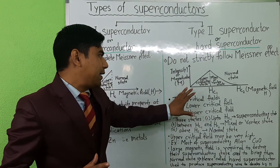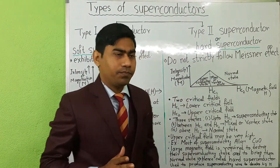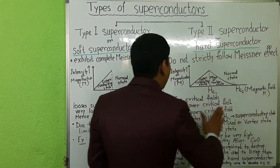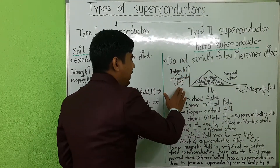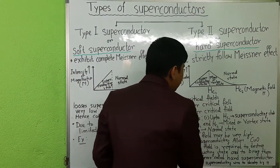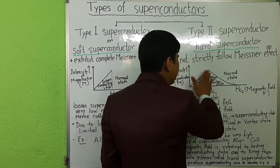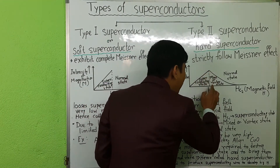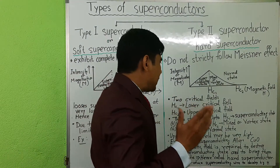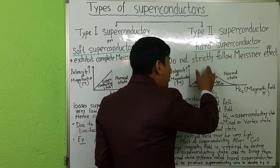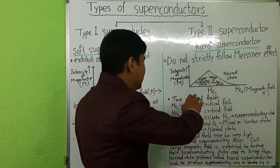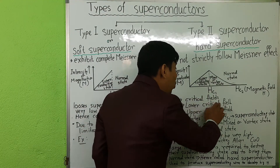To explain type 2 superconductors, we draw the magnetization graph. Here also, along the x-axis we plot magnetic field H and along the y-axis we plot intensity of magnetization M. We will see that if we increase the magnetic field, magnetization increases up to a particular value of magnetic field, which is denoted as Hc1. This critical field Hc1 is called the lower critical field.